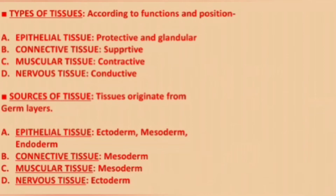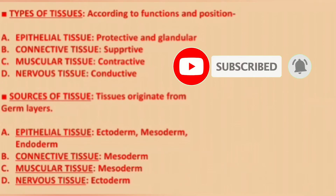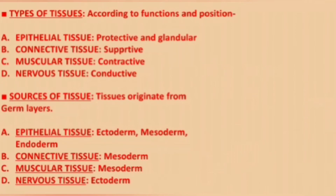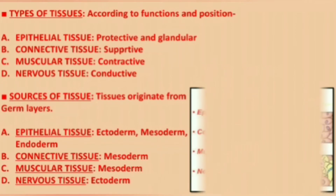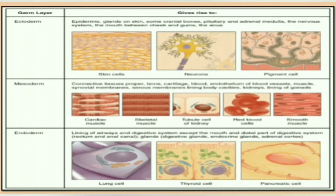From three germ layers: epithelial tissue originates from ectoderm, mesoderm, and endoderm; connective tissue is formed from mesoderm; muscular tissue is formed from mesoderm; and nervous tissue is formed from ectoderm. The four human tissue types are epithelial, connective, muscle, and nervous. The germ layers and the tissues they give rise to are shown in this diagram.